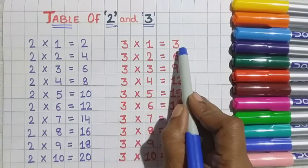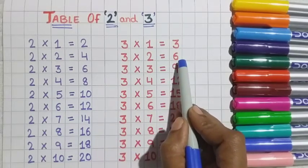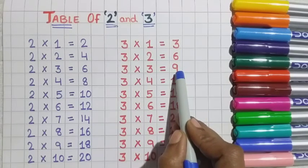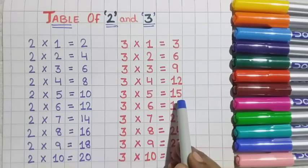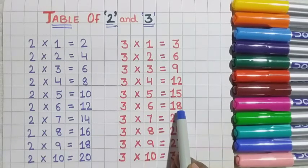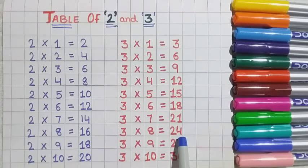3 ones are three. 3 twos are six. 3 threes are nine. 3 fours are twelve. 3 fives are fifteen. 3 sixes are eighteen. 3 sevens are twenty-one. 3 eights are twenty-four. 3 nines are twenty-seven.